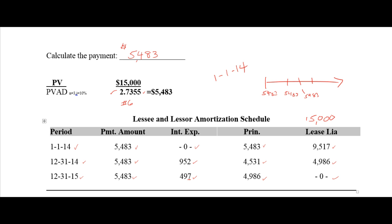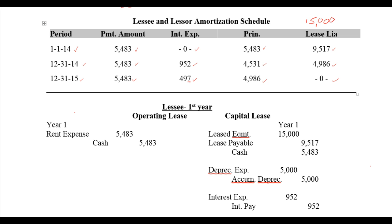Let's look at how the accounting would go for year one for the lessee. For the lessee in year one, assuming it's an operating lease first — it would probably only be a one-year lease because title isn't transferring and none of the four capital lease tests are met. When you write the check, it would be debit rent expense and credit cash.